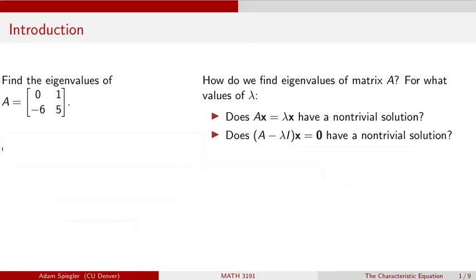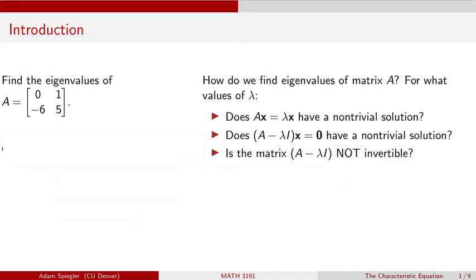We rearrange this matrix equation into the form where we ask: when does (A minus lambda times the n by n identity matrix) times the vector X equal the zero vector have a non-trivial solution? This equation has a non-trivial solution only if the matrix A minus lambda I is not invertible.